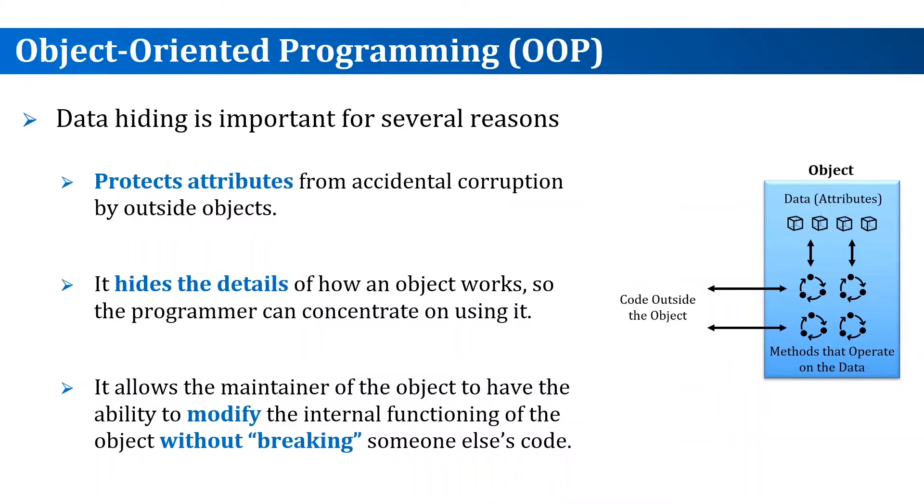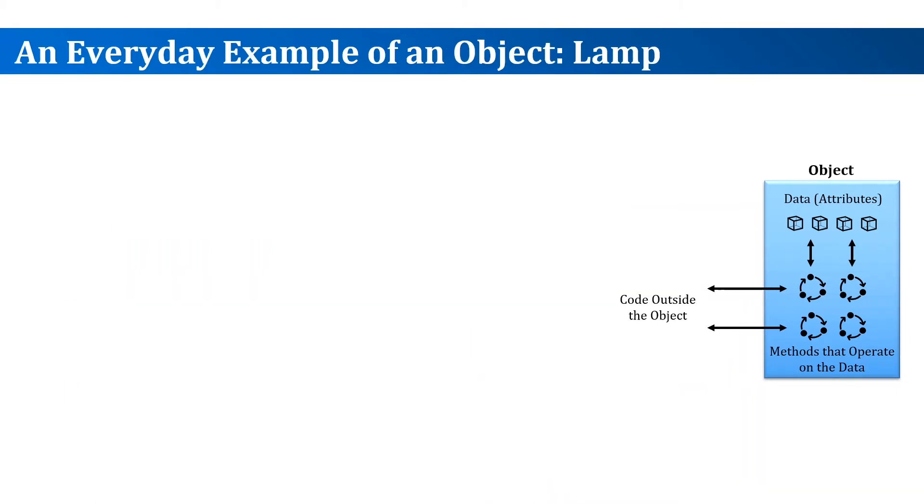Let's take an example of an object that we use in our everyday life: a lamp. The data attributes of a lamp could be its state, on or off, and its rating in watts. We could add more attributes if we want to.